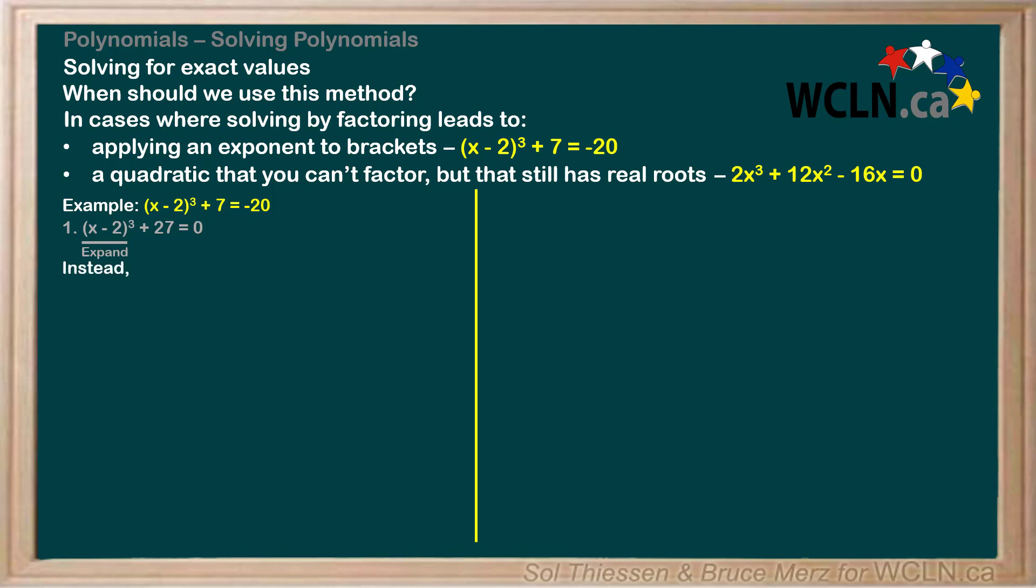Instead, the solving for exact values method suggests that we try to isolate x using algebra. We'll start by subtracting 7 from both sides to get (x - 2)³ = -27. Then we'll take the cube root of both sides to get x - 2 = -3. Finally, we add 2 to both sides to come up with x = -1 as our solution. As you can see, this method is much less labor-intensive than solving by factoring would have been.